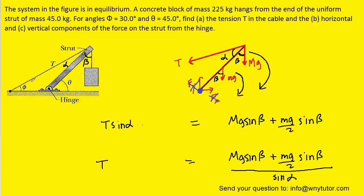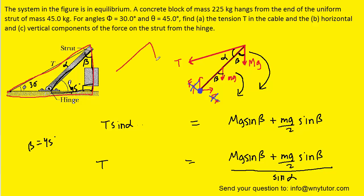Going back to the original diagram: the angle of 30 degrees and theta of 45 degrees are given. For beta, we can see a right triangle where one angle is 45 degrees and another is 90 degrees, so beta is also 45 degrees. For alpha, we consider another right triangle — the angle at the base is 30 degrees, making the complementary angle 60 degrees total. Since that 60-degree angle is made up of both beta and alpha, and beta is 45 degrees, alpha must be 15 degrees.